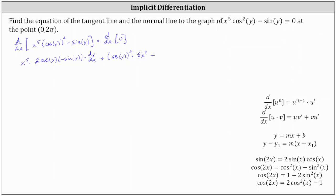Then we have minus the derivative of sine y with respect to x, which is cosine y, times dy/dx. On the right, the derivative of zero with respect to x is zero.